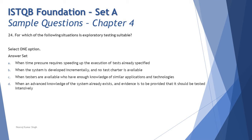Option C says: testers are available who have enough knowledge of similar applications and technology. That fulfills one of our criteria — knowledge about the domain or past experience of similar applications. Let's look at option D.